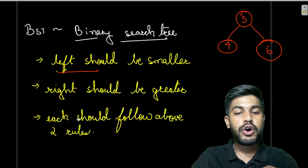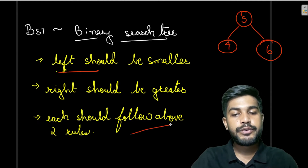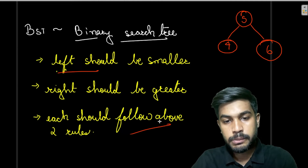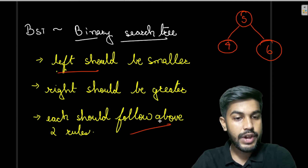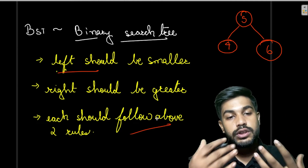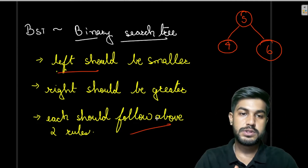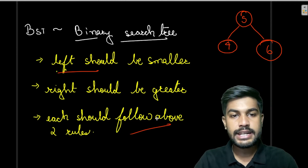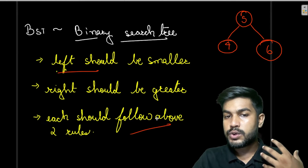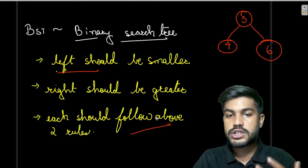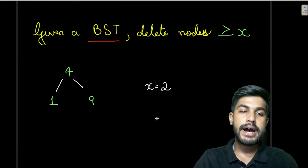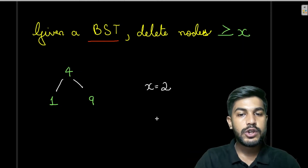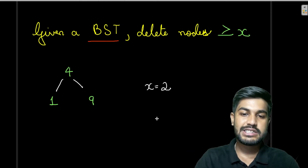Each node and all subtrees should follow these two rules — all sub-nodes on the left as well as on the right must follow them. Now we know the definition of Binary Search Tree and the rules it follows. In this given BST, we need to delete all nodes that are greater than x.